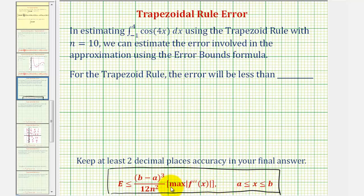To determine this maximum function value on the closed interval, we can either analyze a graph of the second derivative function on this interval, or we can find the critical numbers and then evaluate the second derivative function at the critical numbers as well as the endpoints, because we do have a closed interval.